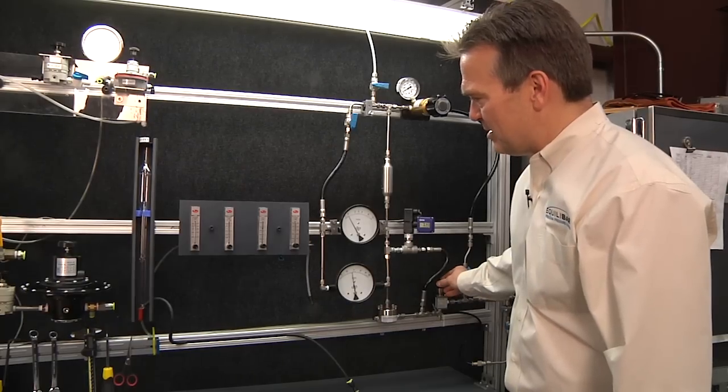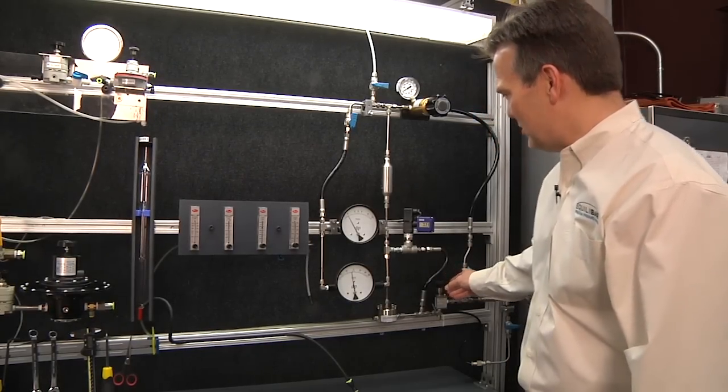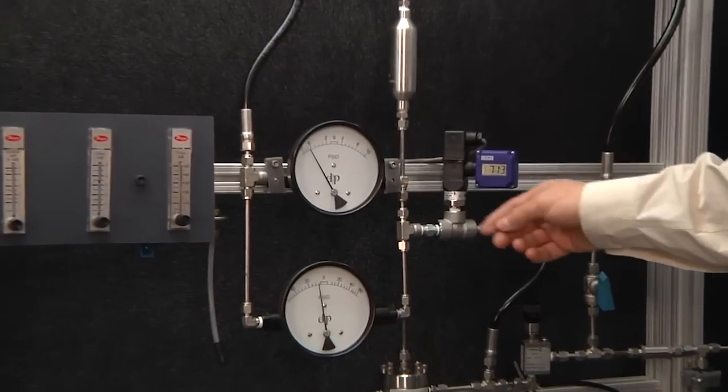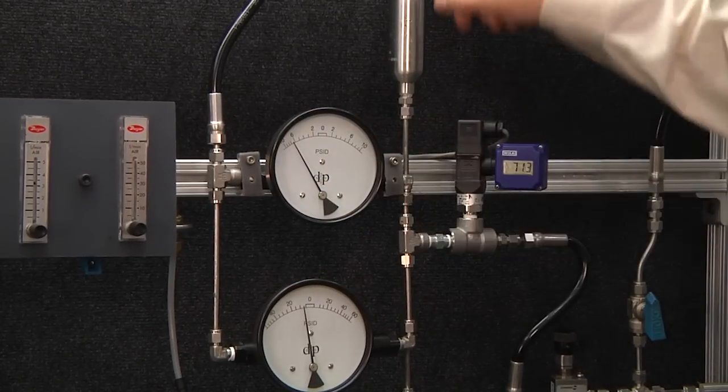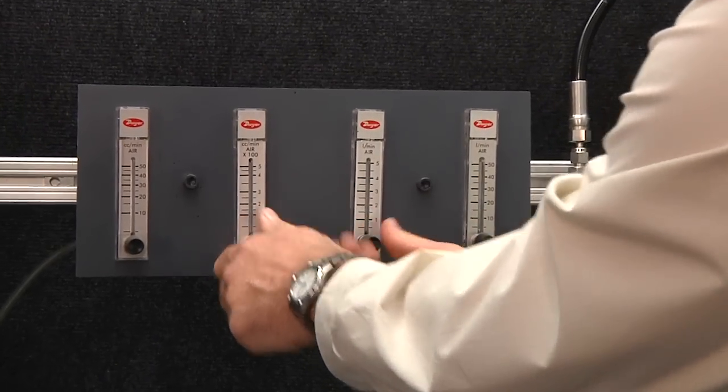Right now we have about 4,000 cc's per minute or 4 liters per minute passing through the ZF regulator. The inlet is about 713 psi and we're about 7 psi above the gas pilot pressure. What we're going to do is step that down a decade at a time.